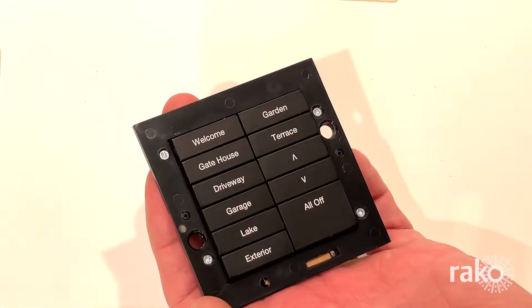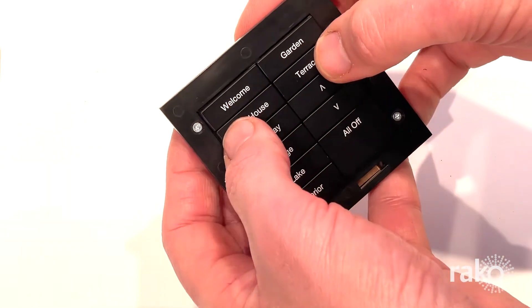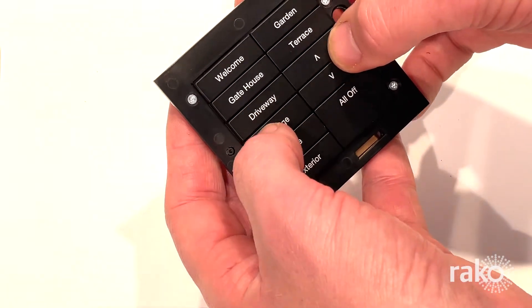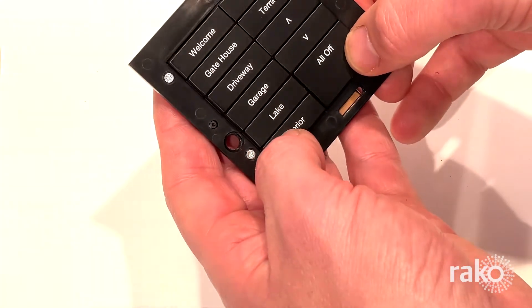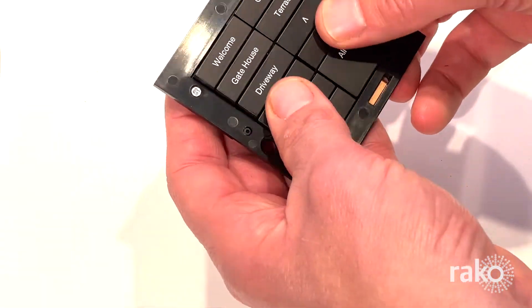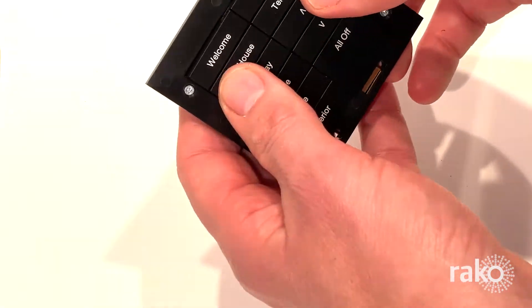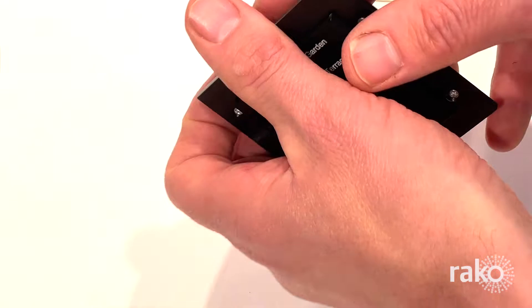Once all the screws are in place, check the operation of all the buttons making sure that it all feels correct and nothing is sticking. There shouldn't be any resistance or inconsistency between the different button presses. If something doesn't feel right, repeat the process checking that you follow each step correctly.